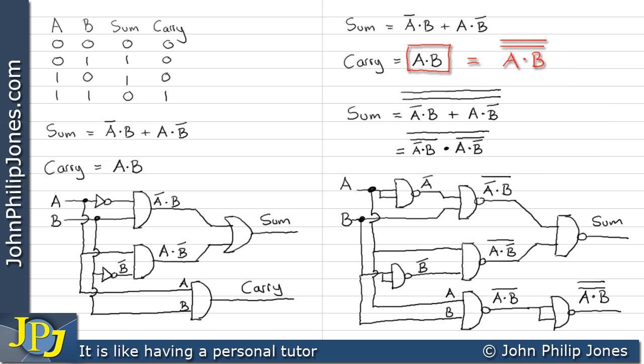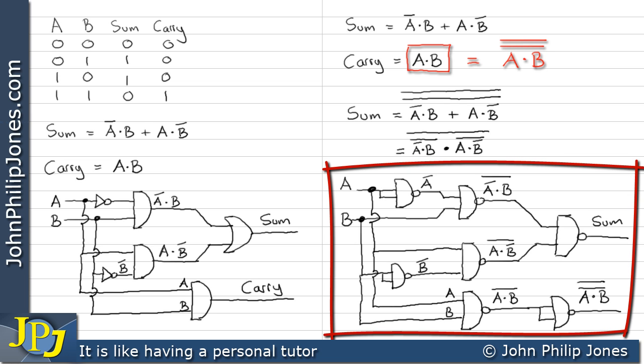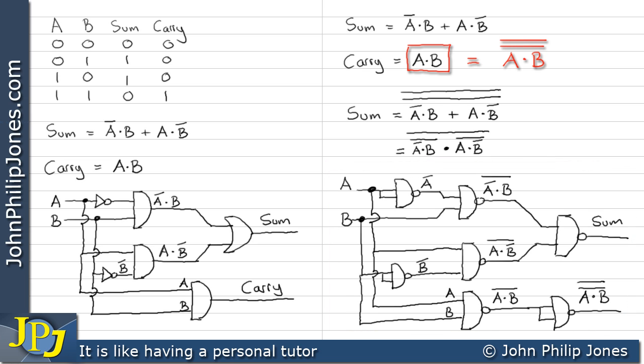So we end up with the half adder being built entirely from NAND only gates. This is another illustration of how we can build circuits, combinational logic circuits, to carry out a particular function using the universal NAND gates.